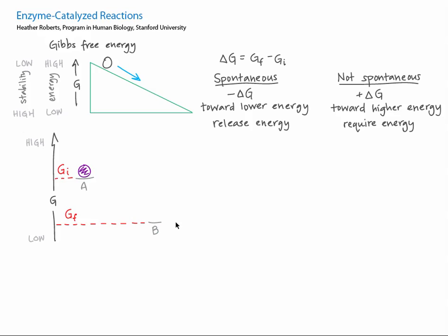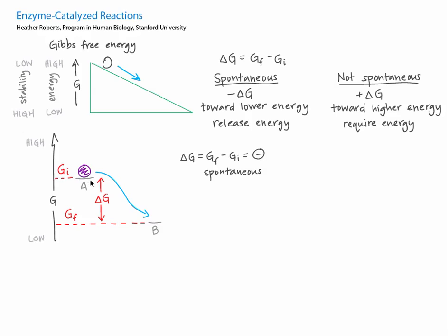Another part of the surface, point B, has a lower free energy, GF, for G final. Naturally, this marble would, if it could, roll from A to B, from G initial to G final, toward lower energy and more stability. There's a force driving the marble to roll downhill. This results in a negative delta G, and it tells us that the process from A to B is favorable, or spontaneous. Remember that spontaneity doesn't mean the marble can roll downhill — it only means that it would if it could.